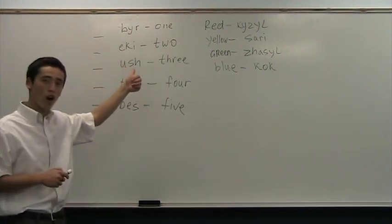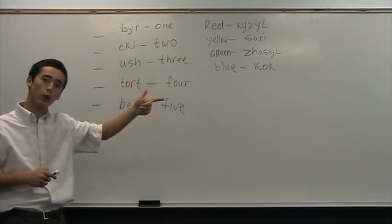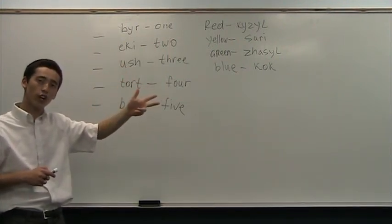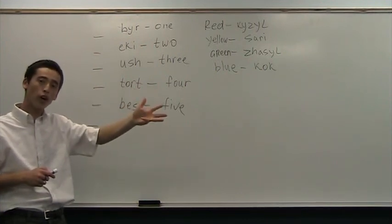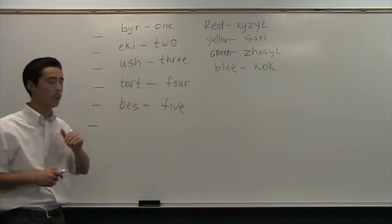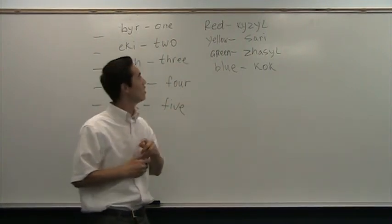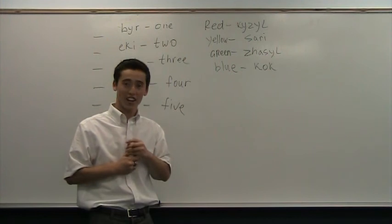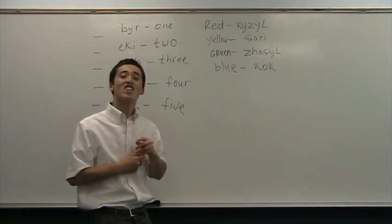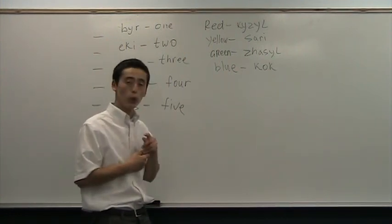Let's review. Bir, one. Yek-e, two. Ыш, three. Tört, four. Bes, five. Next, colors. Red, kızıl. Yellow, sarı. Green, jasl. Blue, cook.